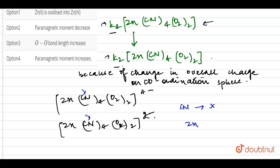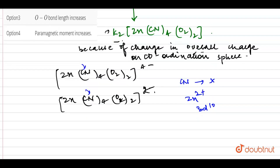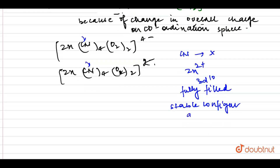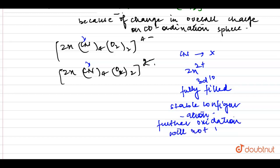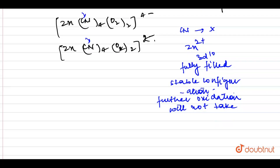If I talk about Zn, then Zn is in plus 2 state with a 3d¹⁰ configuration — a fully filled, stable configuration. So, further oxidation of Zn will not take place. This is a fully filled stable configuration and oxidation will not occur.